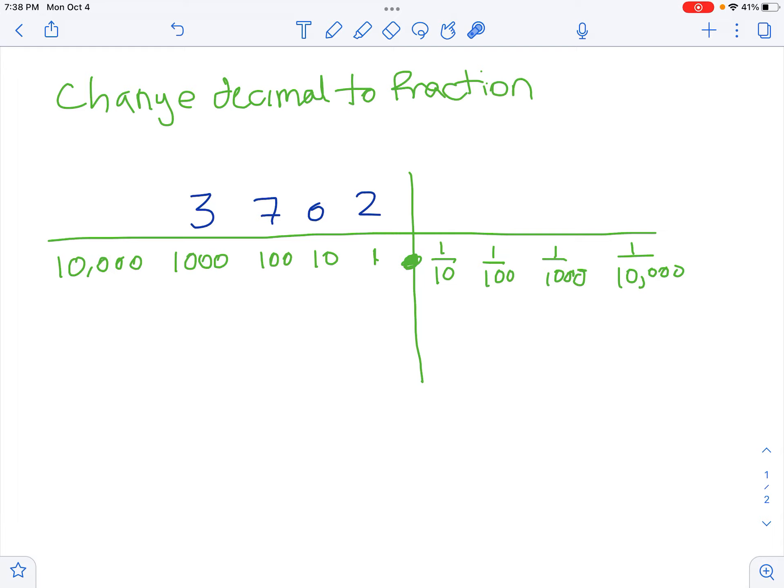And then place value works the same way in the decimal land. So after the decimal point, you have 1 tenth, 1 hundredth, 1 thousandth, and 1 ten thousandth. So I would read this number, that's 0.3, I could write 0.3, 0 ones, 3 tenths. So that number right there is 3 tenths.